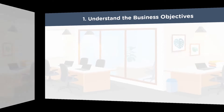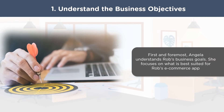First and foremost, Angela understands Rob's business objectives, problems, and requirements. Without understanding these, she would not be able to proceed. A business analyst like Angela understands the problems related to the business and comes up with the right solution to achieve its goals. She brainstorms around what is best suited for an e-commerce app focusing on electronic gadgets.